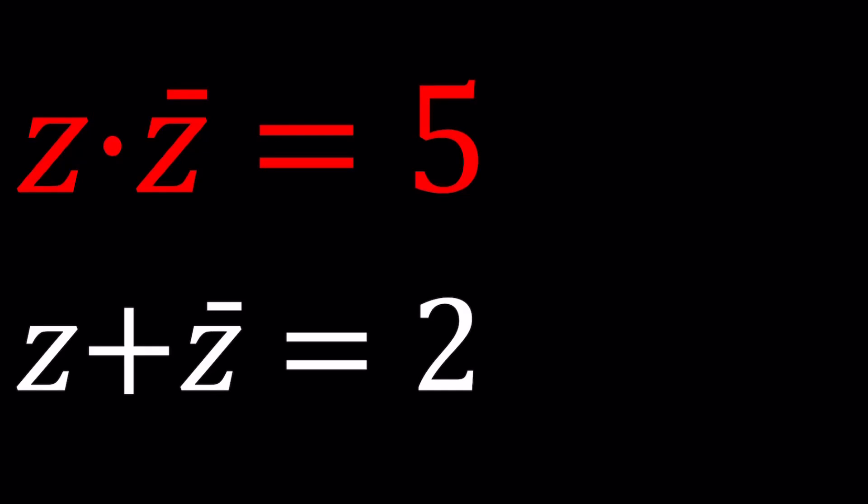Hello everyone, welcome to A plus B I. This channel is all about complex numbers, and in this video we're going to be solving a system of equations. Z bar is the conjugate of Z, and we are given two equations: Z times Z bar equals 5, and Z plus Z bar equals 2.